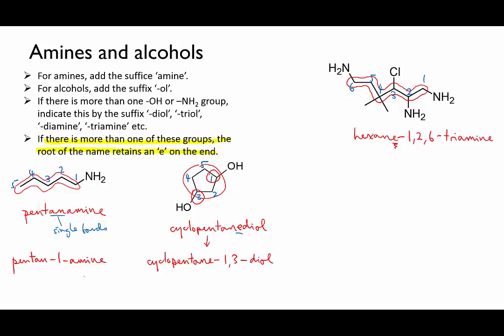Okay, now the substituents. We have 3-chloro and 2,4-methyls. So we need to put all that together and we need to list the substituents alphabetically. So that gives us 3-chloro-2,4-dimethylhexane-1,2,6-triamine. Done!